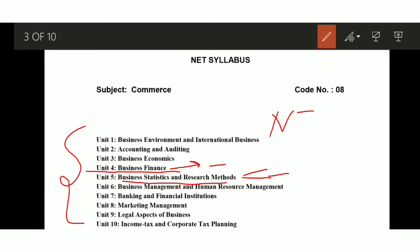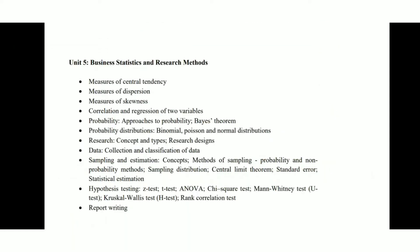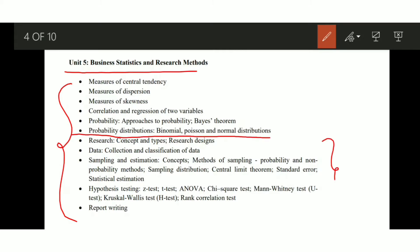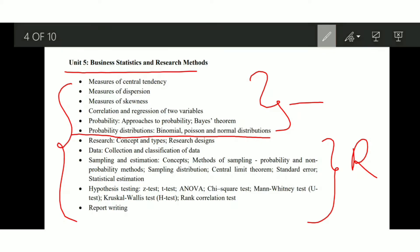NTA asks around 9 to 10 questions from each unit, so you don't have to skip any unit — each and every unit is important. The UGC syllabus for Business Statistics and Research Methods is covered up to Probability Distribution, after which the Research Methods topics begin. In this video we'll discuss what topics are important and what you need to prepare for the exam.